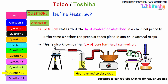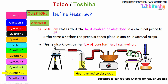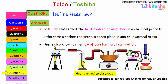Define Hess's law. This is one of the very important questions. In the case of generating heat between an object and emissions, Hess's law states that the heat evolved or absorbed in a chemical process is the same whether the process takes place in one or in several steps. This is also known as the law of constant heat summation.